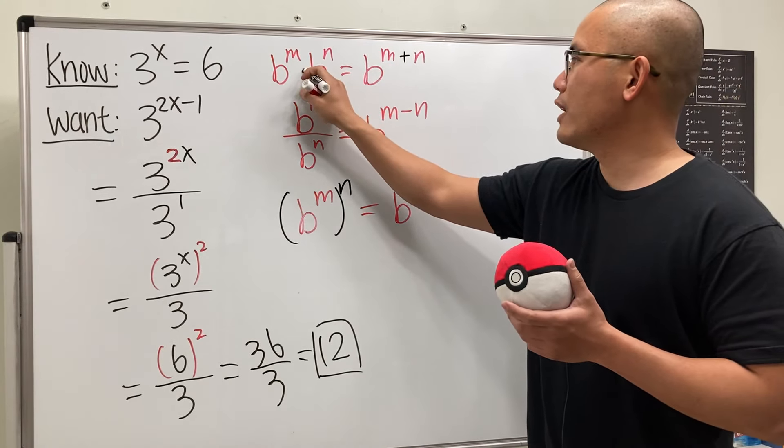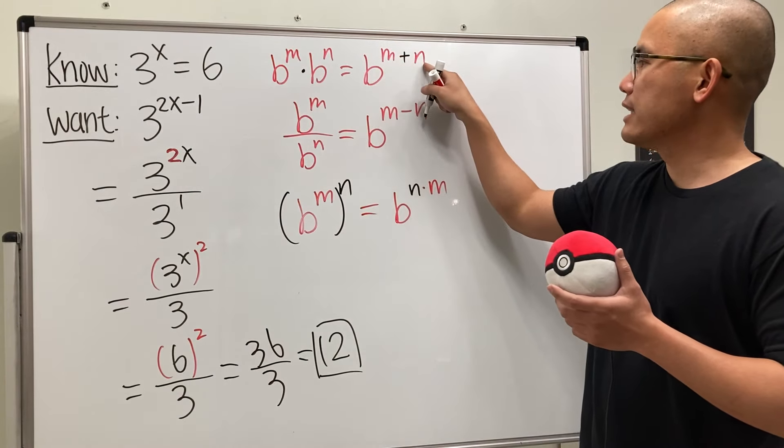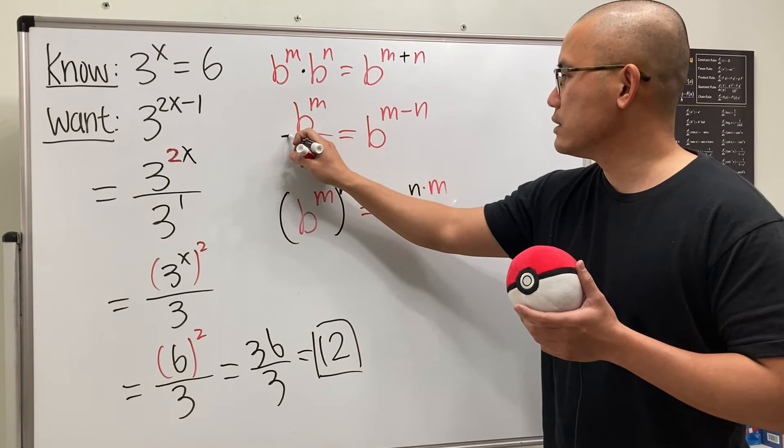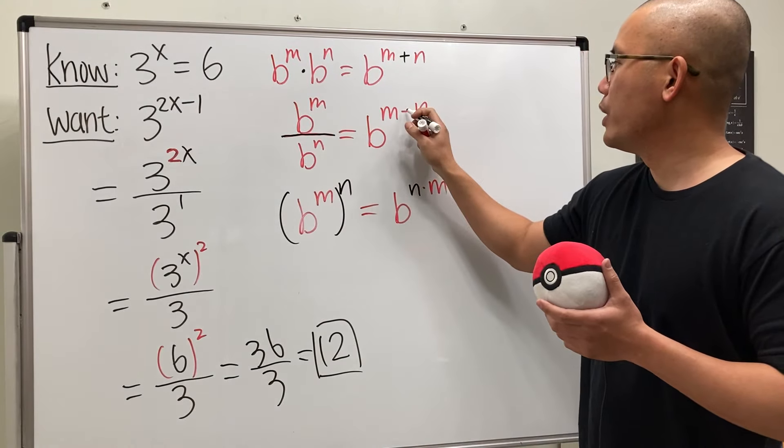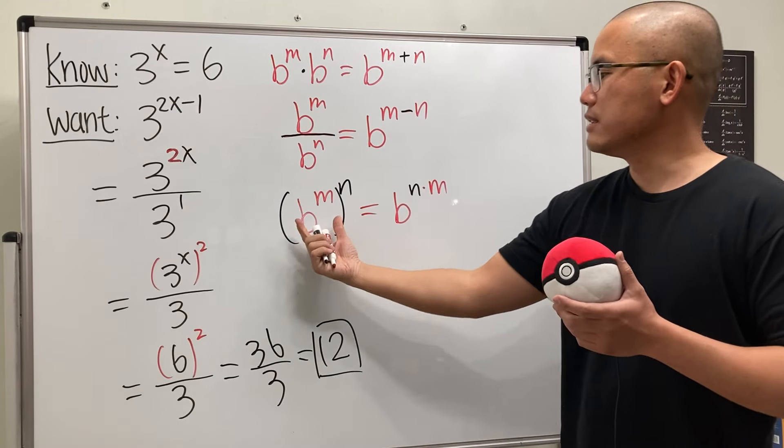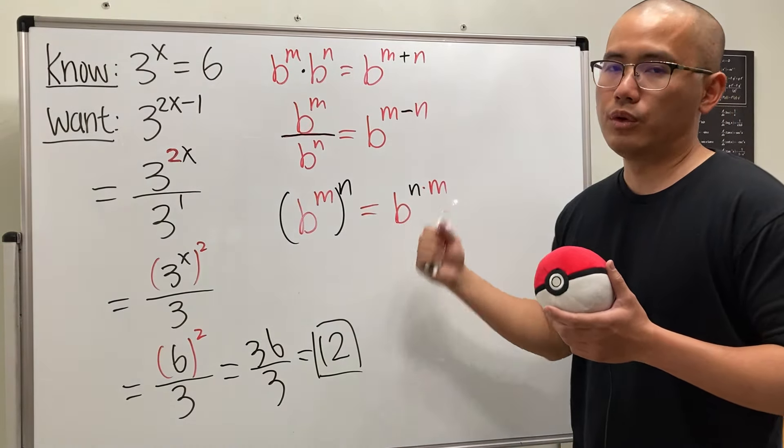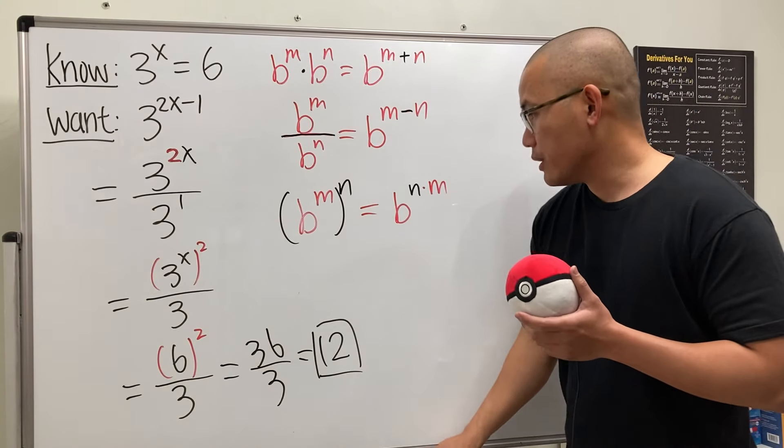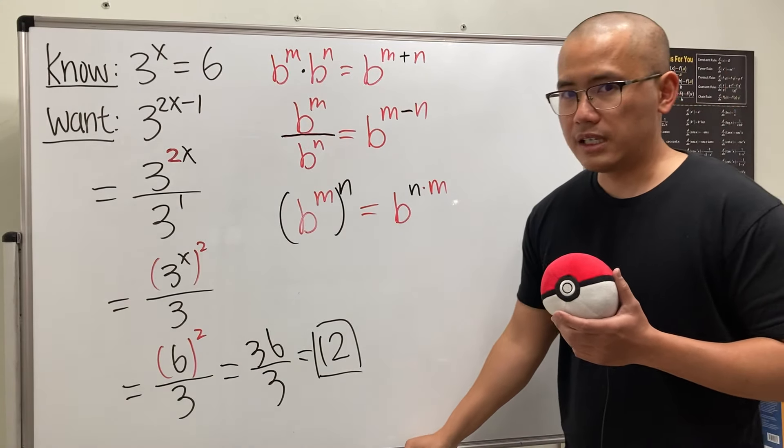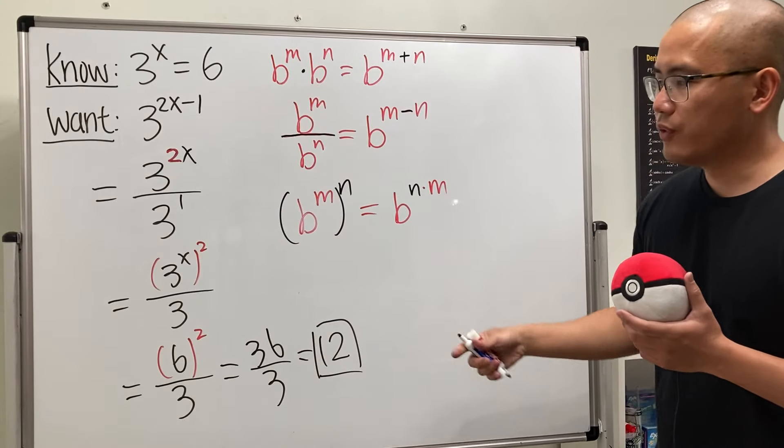Right? You see, when we have multiplication here, we will add the exponents. And if this is a subtraction, we will subtract. And if this is a power to a power, we multiply the powers. So, I think this is a really good exercise to reinforce your understanding for rule of exponents.